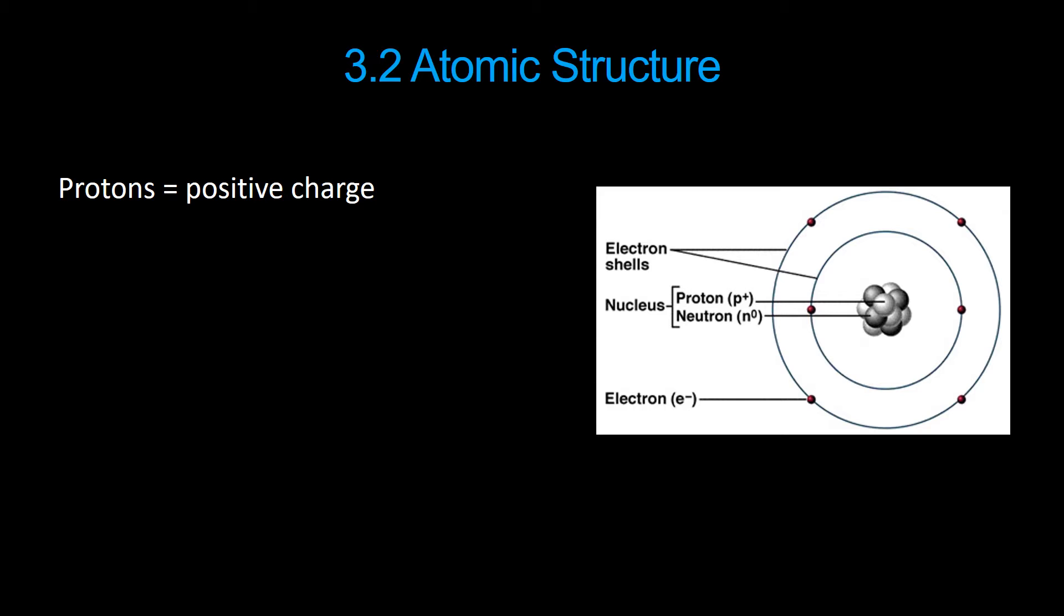The atomic structure is this: You have protons in the nucleus, and protons have a positive charge. Neutrons are also found in the nucleus, and they have a neutral charge. Protons and neutrons have about the same mass. Orbiting the nucleus are electrons, and they have a negative charge, and they are much lighter than both protons and neutrons.